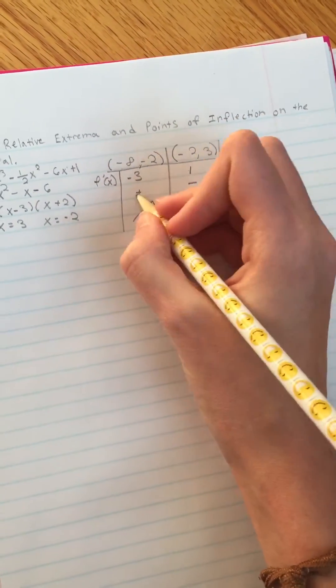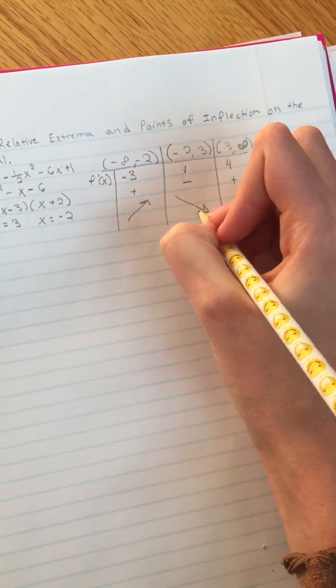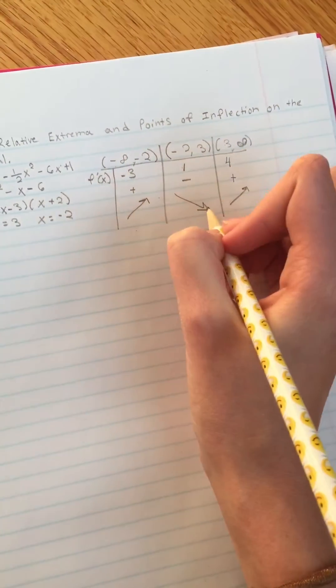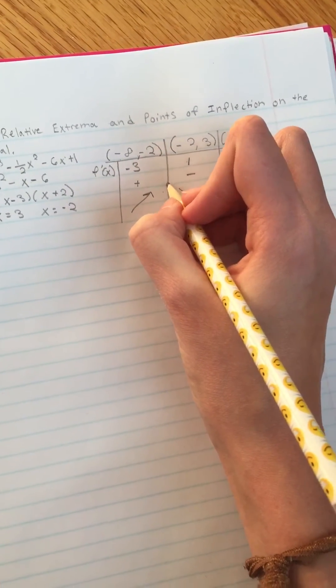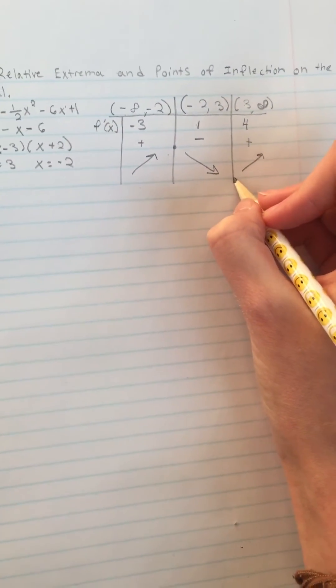So that's how you know that this is going to be increasing on this interval, decreasing, and increasing. I like to write out this visual so I can see that right here it's going to be a maximum, and down here it's going to be a minimum.